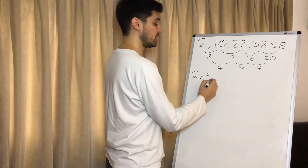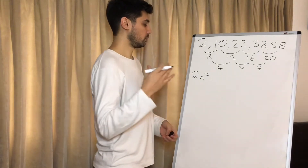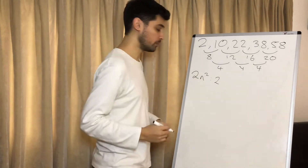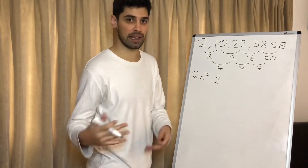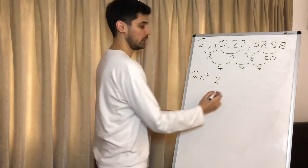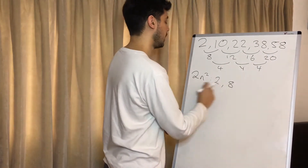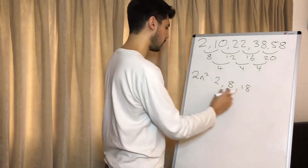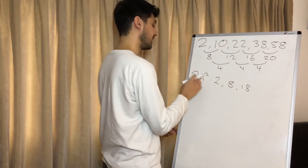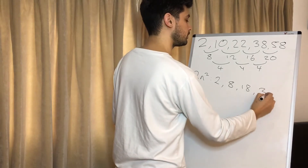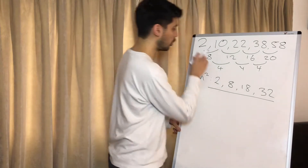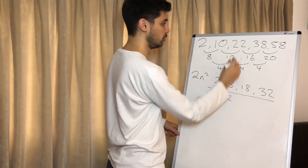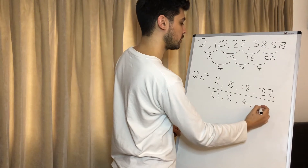Our next step is we write out the sequence of 2n squared to see what we have right now. The first term, when n is 1: 1 squared is 1 times 2 is 2. Remember we do the squared first, then times by 2 because of BIDMAS. Next term: 2 squared is 4 times 2 is 8. Then 9 times 2 is 18. Then 4 squared is 16 times 2 is 32. So: original minus what we have — 2 minus 2 is 0; 10 minus 8 is 2; 22 minus 18 is 4; 38 minus 32 is 6.